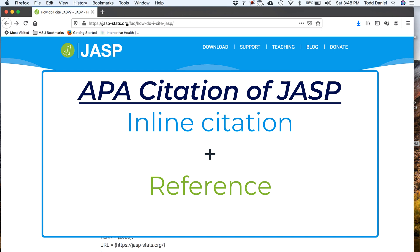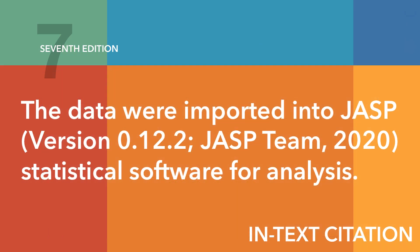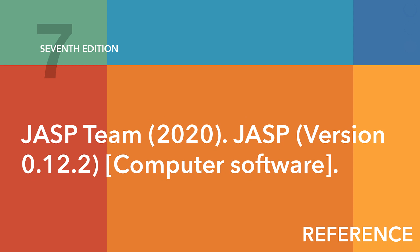So how do I do that? In the text, I would write this — the version number and the reference are in parentheses. You could follow this same example for any non-common software that you use. For my reference on the references page, I would write this, following APA style for computer software. And of course, for your own writing, you should reference the version of JASP that you actually used.